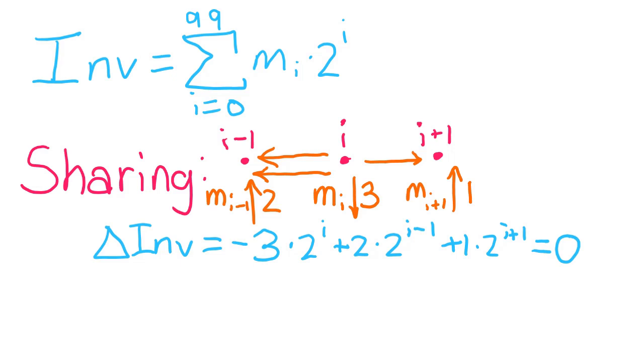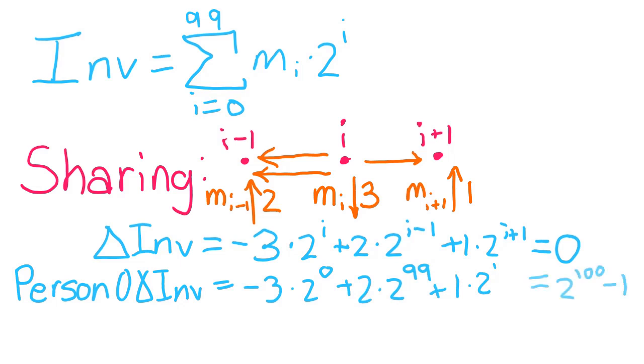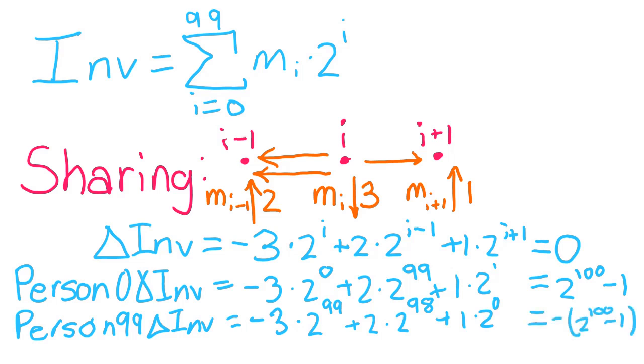Person 0 sharing yields an overall change of -3 times 2^99 + 2 times 2^99 + 1 times 2^1, which is 2^100 - 1. And person 99 sharing overall yields changes of -3 times 2^99 + 2 times 2^98 + 1 times 2^0, which is -2^100 - 1. Our invariant is almost perfect! We only need to find a way to modify our invariant so it can deal with the changes of size 2^100 - 1.